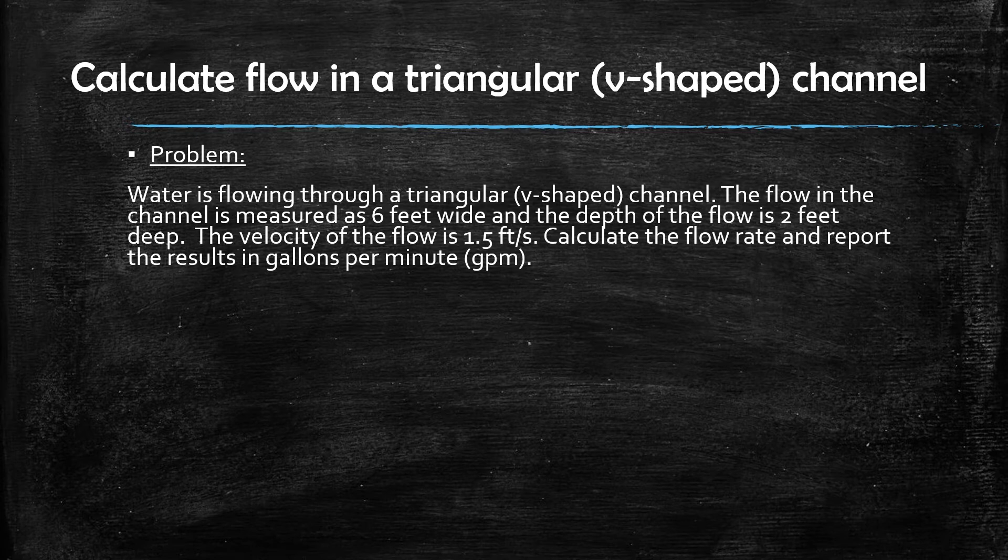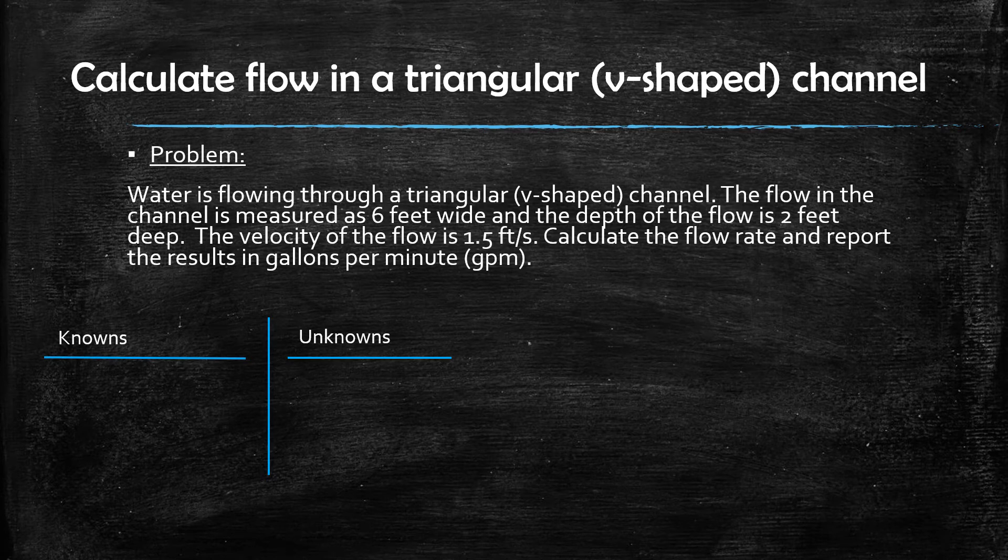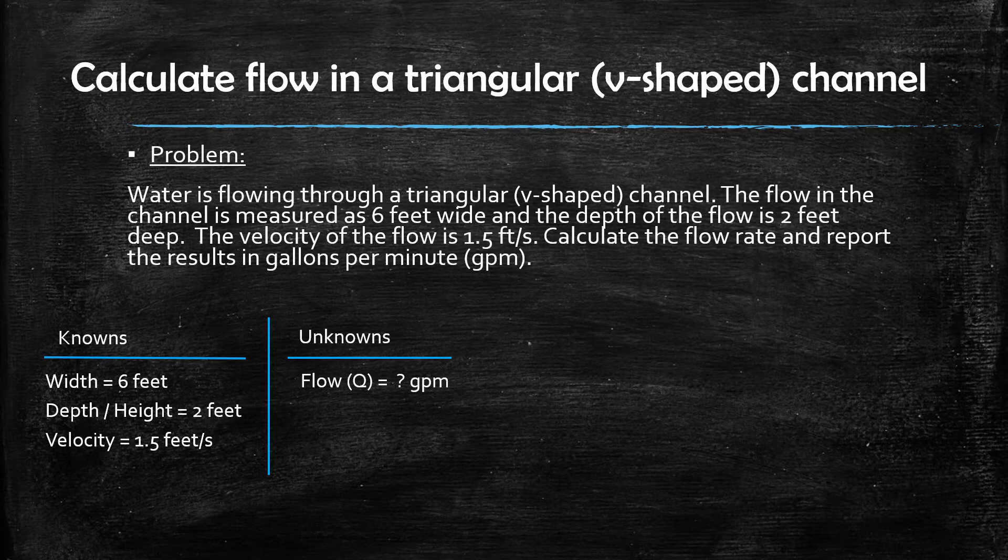The very first step we want to take in solving the problem is to list out all of the knowns and unknowns given in the problem statement. For this problem, we have been given that the width of the flow in the channel is 6 feet, the depth of the flow or height of the flow is 2 feet, and the velocity is 1.5 feet per second. The unknown is the flow rate.